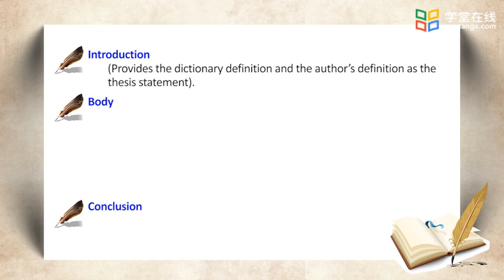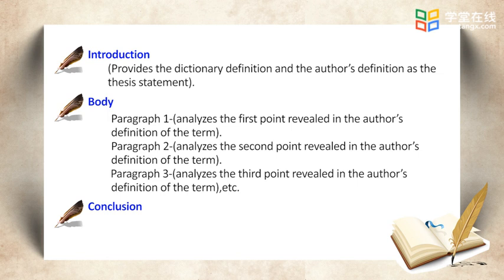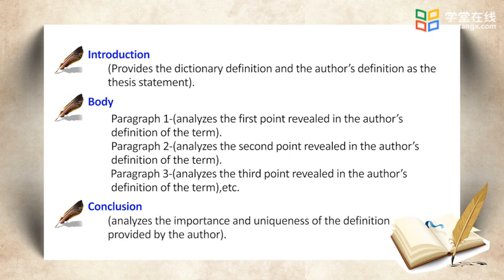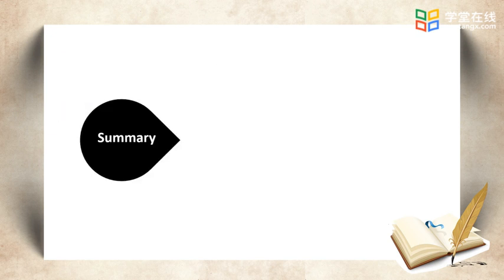First, the introduction usually provides the dictionary definition and the author's definition, which serves as the thesis statement. Second, the main body usually consists of three to four paragraphs, and each will analyze a point or subtopic revealed in the author's definition. Finally, the conclusion usually analyzes the importance and uniqueness of the definition provided by the author, and often restates or echoes the thesis statement.